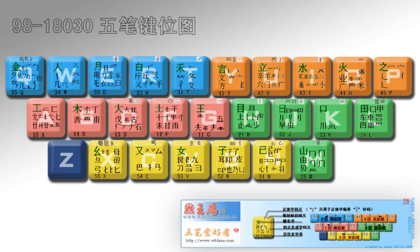Shuangpin, literally 'dual spell', is a stenographical phonetic input method based on Hanyu Pinyin that reduces the number of keystrokes for one Chinese character to two by distributing every vowel and consonant composed of more than one letter to a specific key. In most Shuangpin layout schemes such as XIAOHE, Microsoft 2003, and Ziranma, the most frequently used vowels are placed on the middle row, reducing the risk of repetitive strain injury. Shuangpin is supported by a large number of Pinyin input software including QQ, Microsoft Bing Pinyin, Sogou Pinyin, and Google Pinyin.